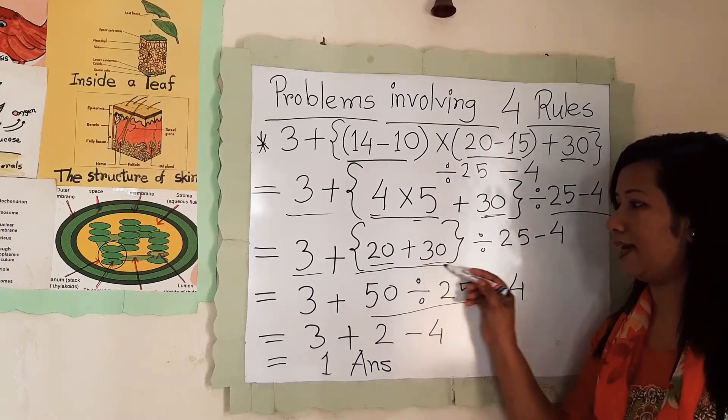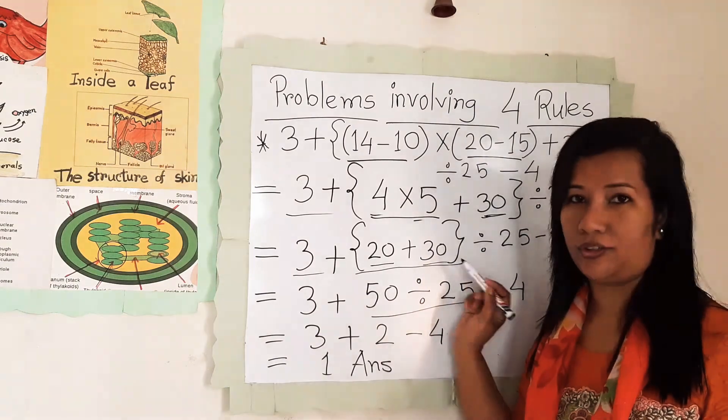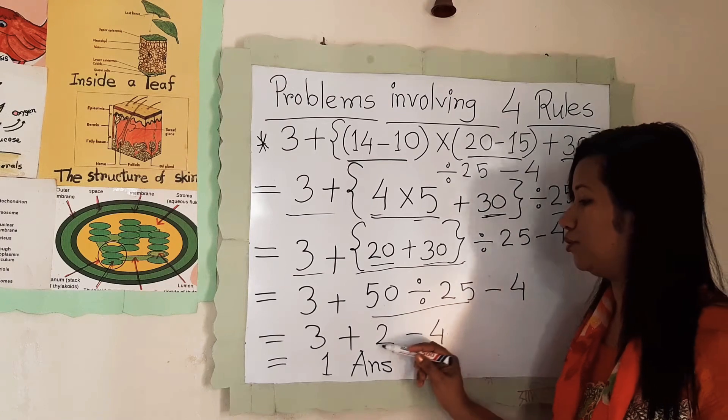Then here is a second bracket. So 15, 20, and 30, so it will be 50. So 50 divided by 25, so 25 times 2 is 50.